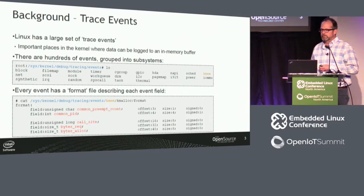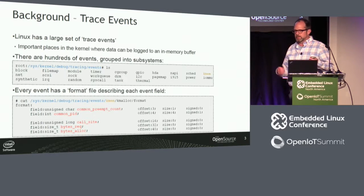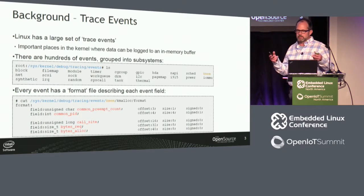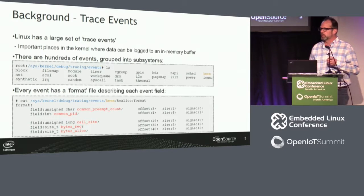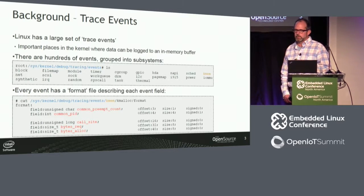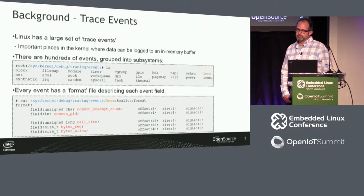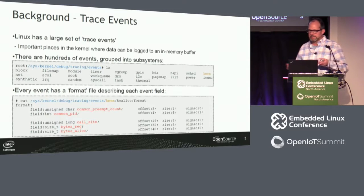Linux has a bunch of places in the kernel where developers and administrators can gather data about what's going on behind the scenes. Those things are called trace events, and they're normally disabled — they don't add any overhead at all to the kernel when disabled. But you can enable them, and when you do, the data goes to a trace buffer, with still pretty minimal overhead.